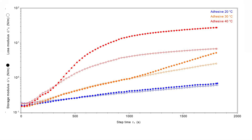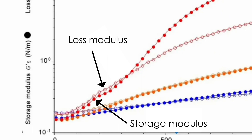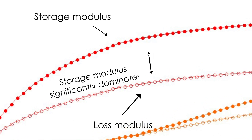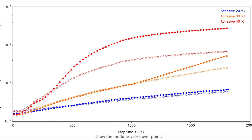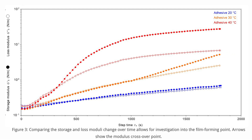As well as collecting complex modulus data, the storage and loss modulus can be easily interrogated. In this example, the adhesive starts with a larger loss modulus, so is liquid dominant. However, as curing starts, the storage modulus begins to dominate and the sample becomes more solid. The differences between samples at different temperatures and how the storage and loss moduli change in relation to each other can also provide valuable insights.